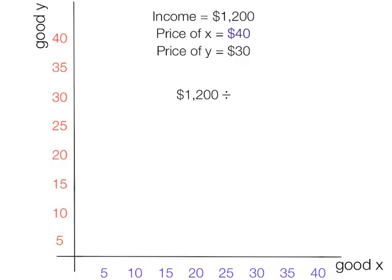The first thing we do is we take income divided by the price of X, which is $40 per unit, and that equals 30 units, or the quantity of X, right there. Income divided by price is equal to quantity. So in this case, the quantity of X is 30.